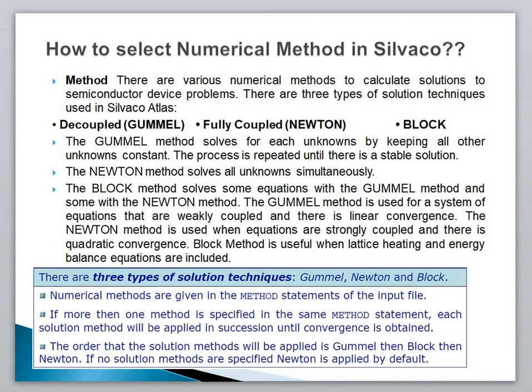The Newton method solves all unknowns simultaneously. The Newton method is different from the Gumel method — in Newton, we take all unknowns simultaneously to solve the equation. Next is the Block method, which solves some equations with the Gumel method and some equations with the Newton method.